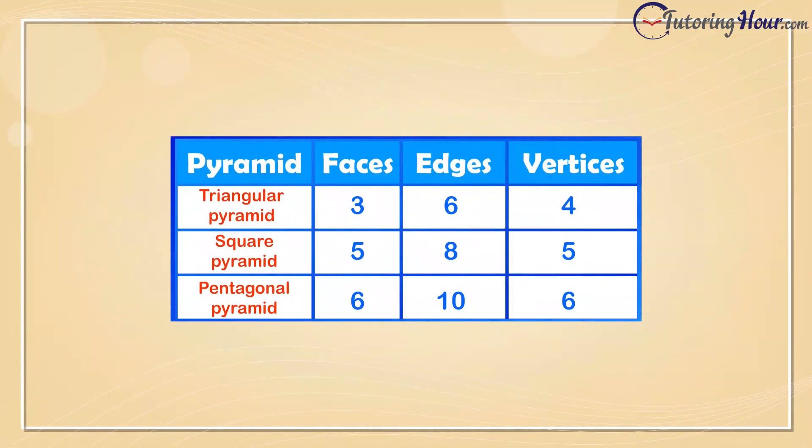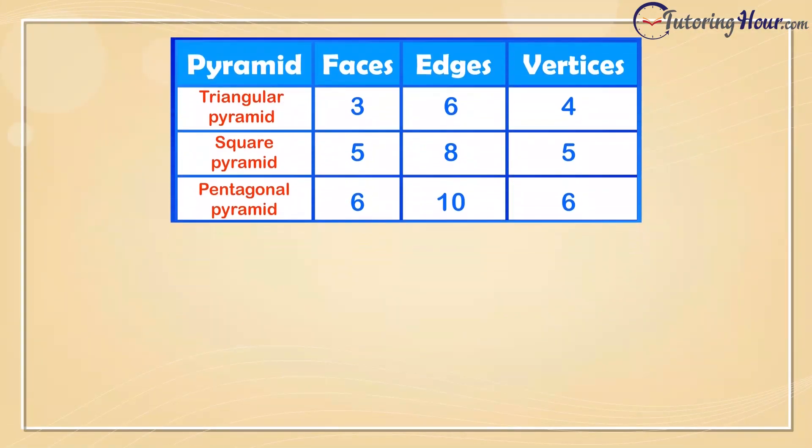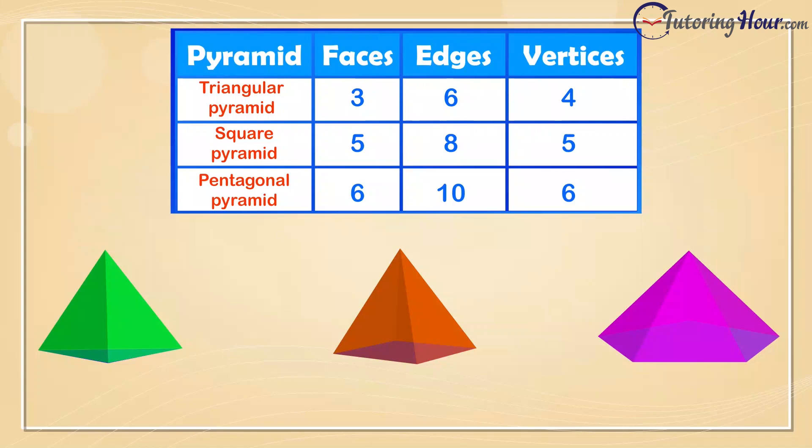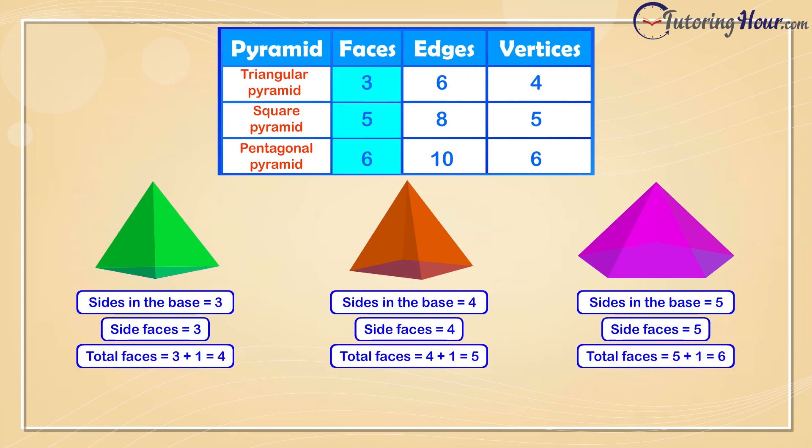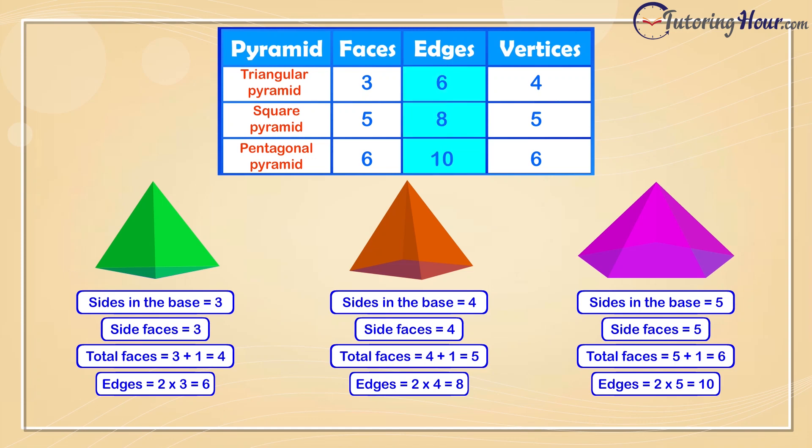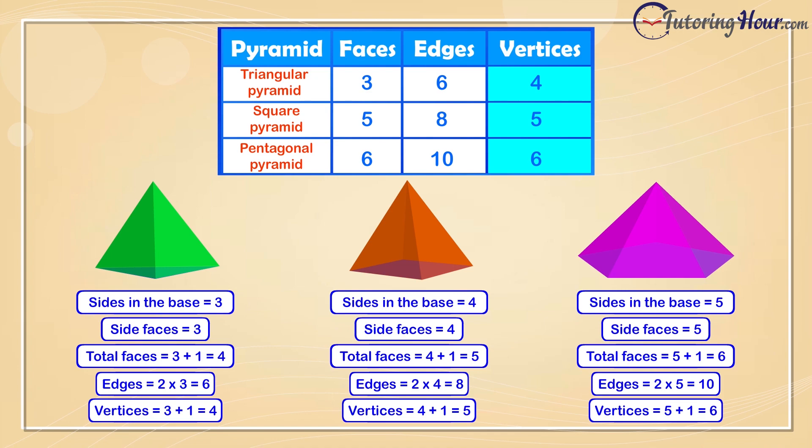Let's take a look at the faces, edges, and vertices of the 3 pyramids. Do you see a pattern? The number of side faces is the same as the number of sides in the base. The total number of faces is the number of sides in the base plus 1. The number of edges is twice the number of sides in the base. The number of vertices is the number of sides in the base plus 1.